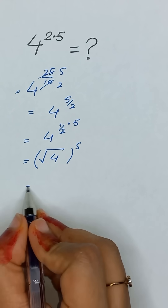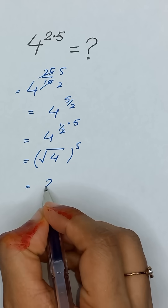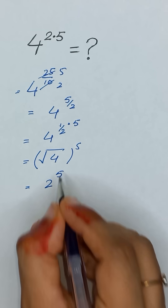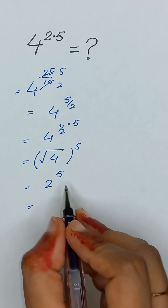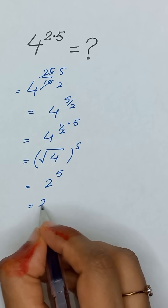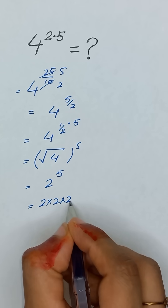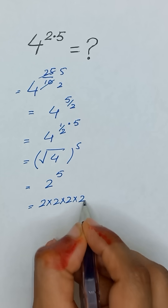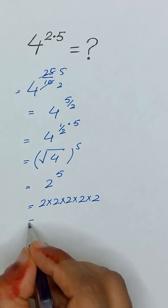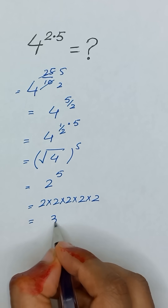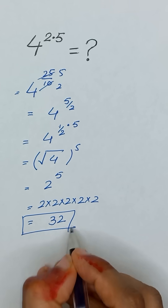The square root of 4 is 2, so this becomes 2 to the power 5. And 2 to the power 5 is 2 times 2 times 2 times 2 times 2, which equals 32. Thanks for watching.